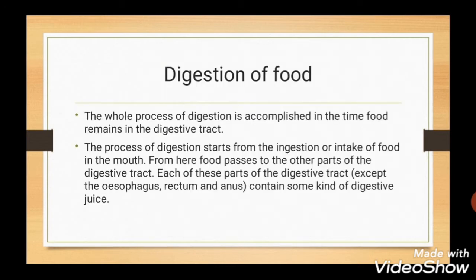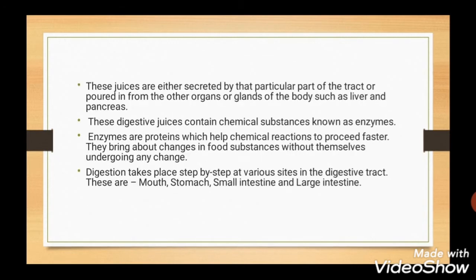Digestion of food starts with ingestion — intake of food in the mouth. From here, food passes to other parts of the digestive tract and is mixed with digestive juices. These digestive juices contain chemical substances known as enzymes. Enzymes are proteins which help chemical reactions to proceed faster; they bring about changes in food substances without themselves undergoing any change. Digestion takes place in various sites of the digestive tract: mouth, stomach, small intestine and large intestine.